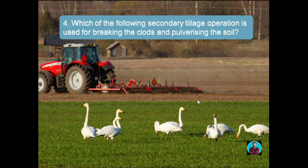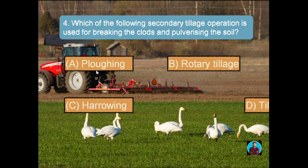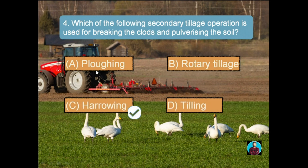Question number four: which of the following secondary tillage operations is used for breaking clods and pulverizing the soil? Option A: Ploughing, Option B: Rotary tillage, Option C: Harrowing, Option D: Tilling. The right answer is harrowing. Ploughing means breaking and turning up the first layer of soil. Rotary tillage is the method of cultivation using a motorized cultivator that works the soil by means of rotary tills or blades.